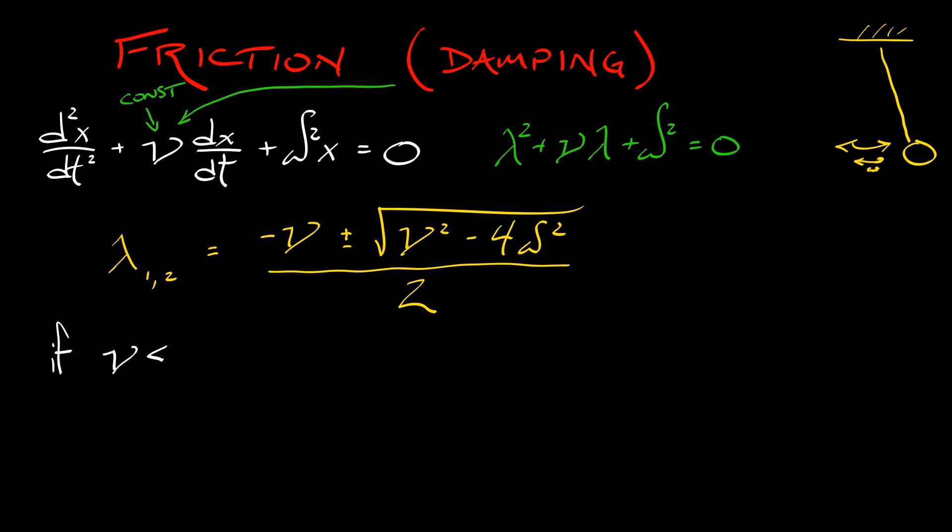If the damping is small, in particular, if nu is less than 2 times omega, then these roots are complex. That discriminant is going to be negative. And that means that we're going to have sines and cosines with an e to the negative some constant t out in front. The real parts of these eigenvalues are going to be minus nu over 2.